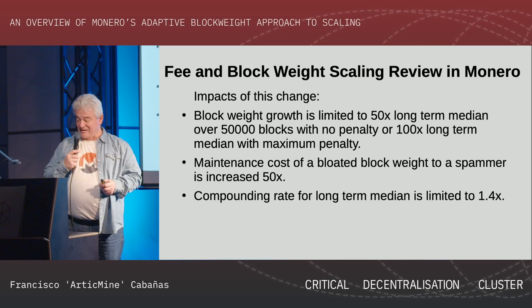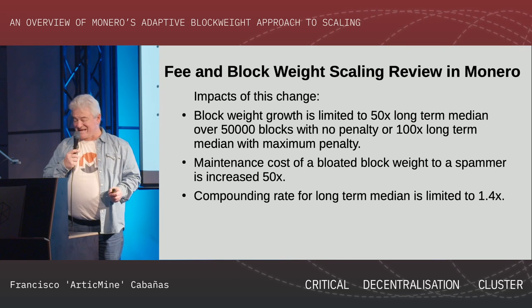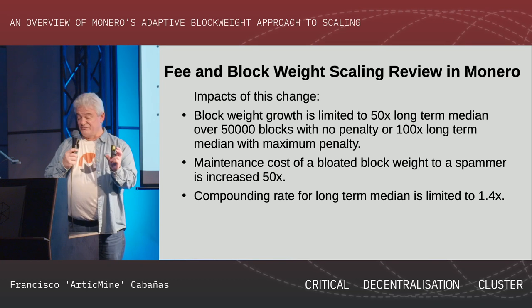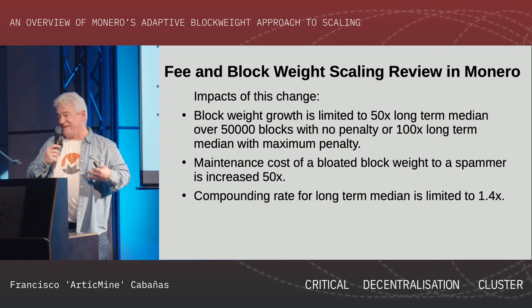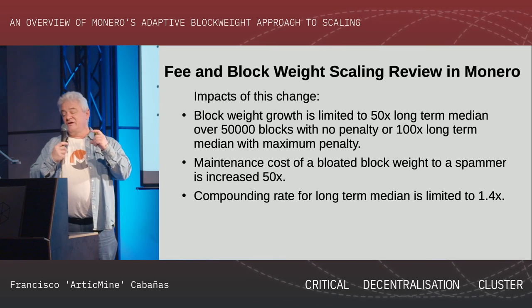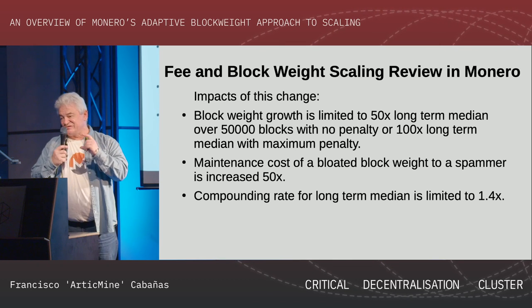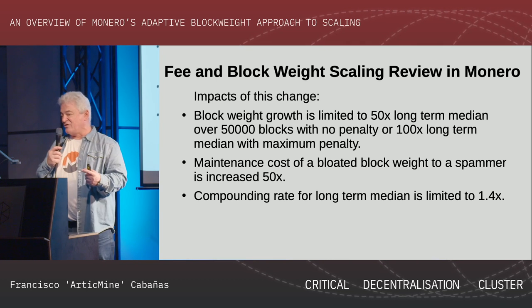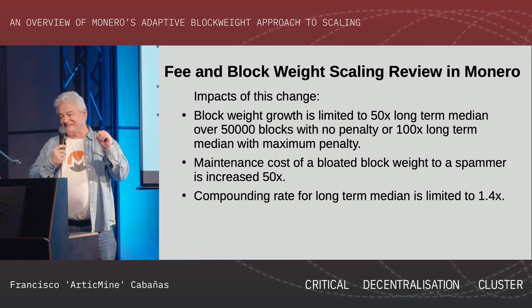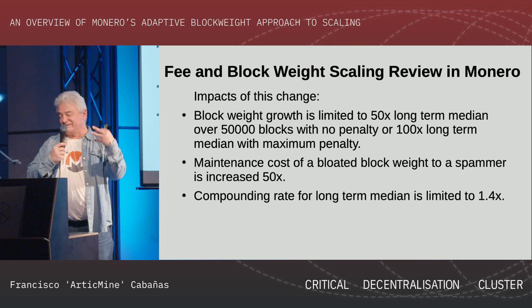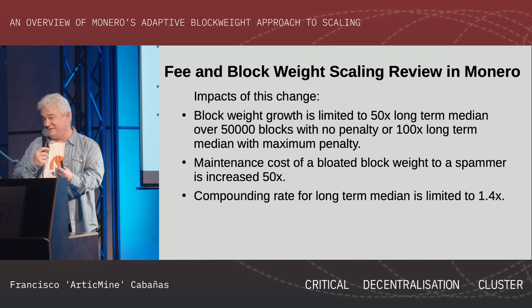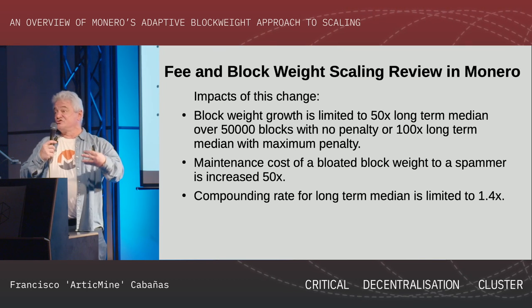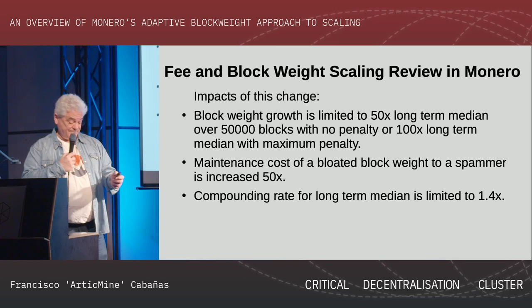The 2019 addition of the long-term median increases the cost of a spammer by a factor of 50. It's a 50,000-block median with no penalty, preventing large bloating attacks while maintaining flexibility. It allows the system to handle, say, a Christmas season surge — Visa's transaction rate on December 23rd is roughly 20 times the average. If you're going to play the transaction game in retail, you need the ability to scale on demand to meet seasonal demand. I'm not sure any other coin has actually built this in.